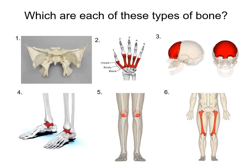Now that we covered the five categories, here's a great review slide. I have six pictures and I want you to pause the video and answer what type of bone each one is — what category they fall under. Label your paper one through six, and then hit the play button when you're ready to go over the answers.